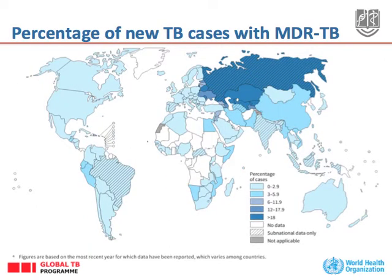This shows the percentage of new TB cases with multi-drug-resistant tuberculosis — the forms of TB most difficult to treat because of high rates of failure and death. In many countries of the former Soviet Union, more than 18% of cases are now multi-drug-resistant.